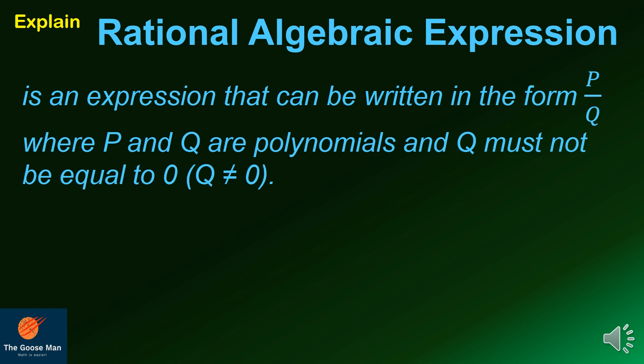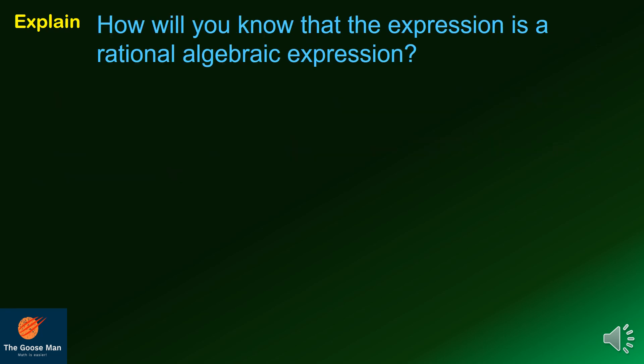To explain the rational algebraic expression: it is an expression that can be written in the form of p over q, where p and q are polynomials and q must not be equal to zero. For example, 6 all over x minus 3 is a rational algebraic expression because both the numerator and denominator are polynomials.